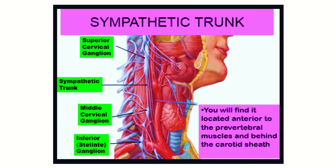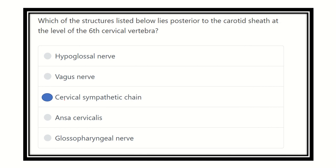At this level, the sympathetic trunk is located just behind the common carotid artery, that means just behind the carotid sheath. So our final answer is the cervical sympathetic trunk, which is located posterior to the carotid sheath at the level of the sixth cervical vertebra. At the same time, we know that the anterior relation is the ansa cervicalis. Thank you.